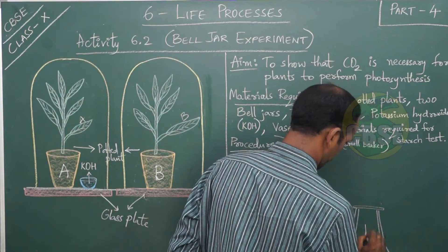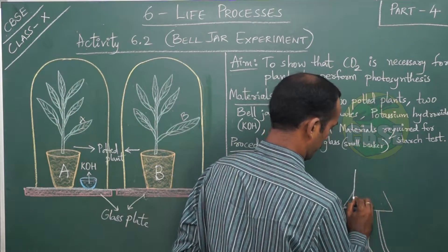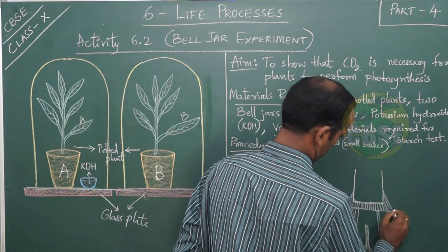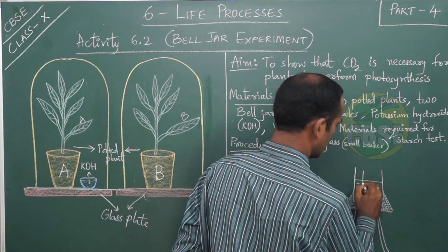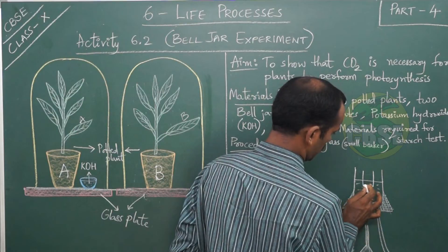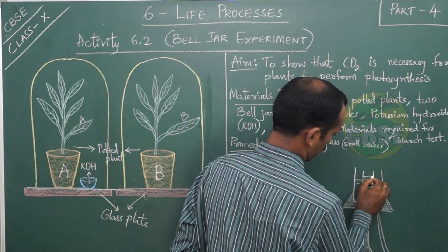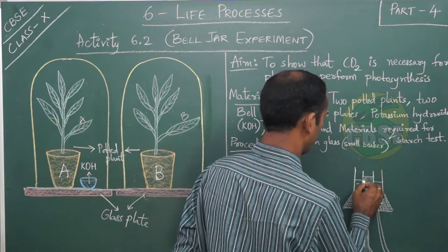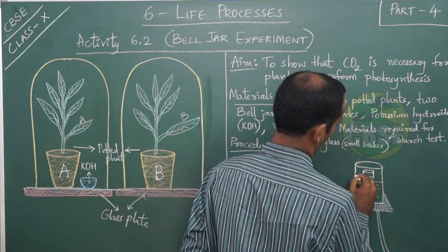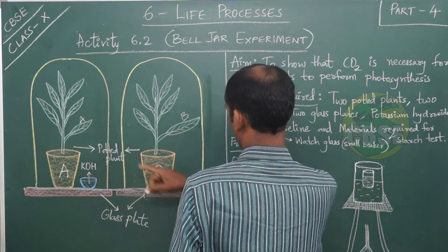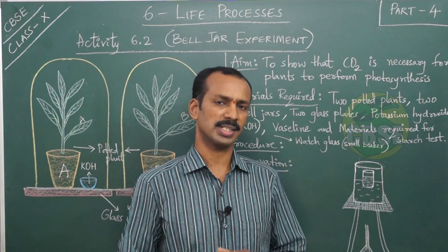You know the procedure for starch test from the previous video. The same procedure applies here: tripod stand, Bunsen burner, wire gauge, water bath with water in it, then placing a beaker which consists of alcohol. We are going to test leaf A first, in the same manner as in the previous activity.